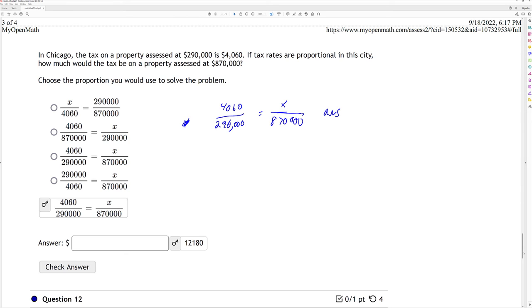In Chicago, the tax on a property assessed at $290,000 was $4,060. If the rates are proportional, how much tax would be on $870,000? So I set up a proportion. Tax for the home is $4,290, x for $870,000. And you select the correct one. Then you can go ahead and solve it for x. You should end up with $12,180.